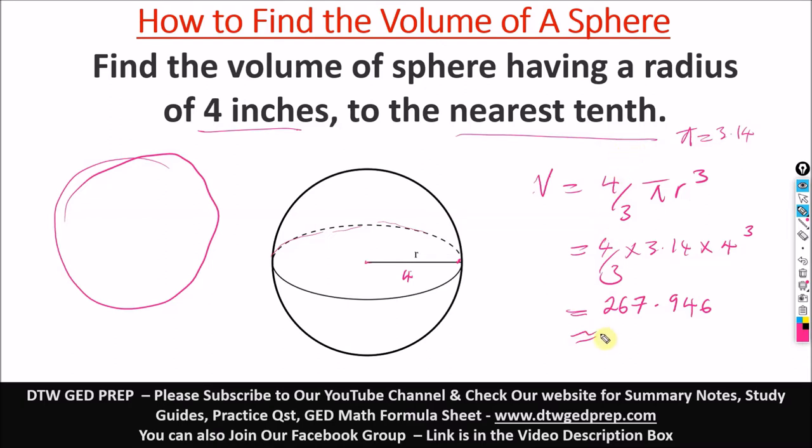Now it says to the nearest tenth. The tenth value is the number immediately after the decimal point, which is 9. After 9, you check the number immediately after: is it up to 5 or greater than 5? It's not up to 5. So we cannot approximate by adding 1. If it was up to 5 or greater than 5, we could add a 1 here. We can't add a 1 since this 4 is not up to 5. So our answer would be 267.9.